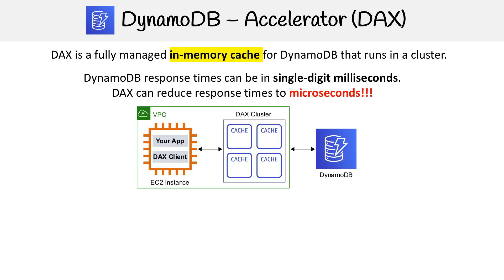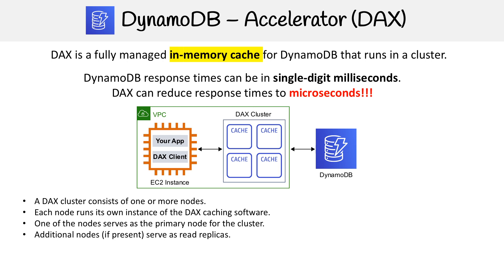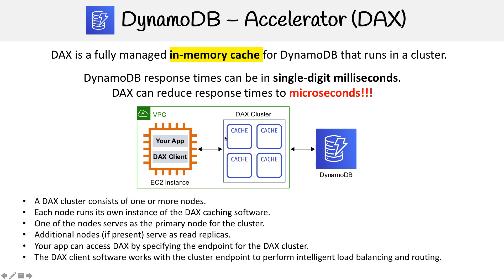Here's an illustration of generally what DAX is. A DAX cluster consists of one or more nodes, each running its own instance of the DAX caching software. One of the nodes serves as the primary node for the cluster, and additional nodes, if present, serve as read replicas. Your app can access DAX by specifying the endpoint for the DAX cluster. The DAX client software works with the cluster endpoint to perform intelligent load balancing and routing, and incoming requests are evenly distributed across all the nodes in the cluster.